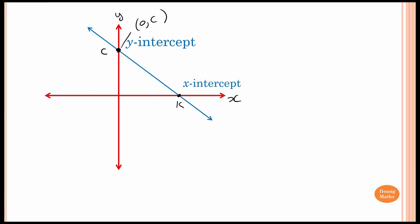So this point can be written as (k, 0), because along the x-axis y is equal to zero. In other words, to find the x-intercept, y must equal zero, because along this axis y is always equal to zero. Similarly, to find the y-intercept, x is equal to zero, because along the y-axis x is always equal to zero.